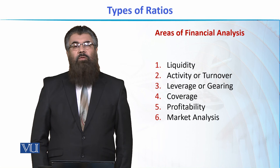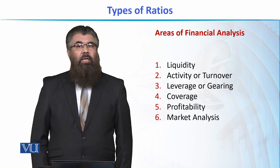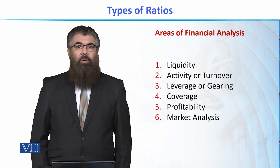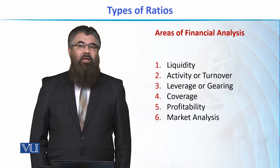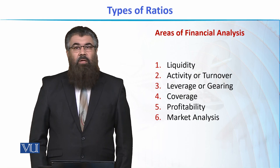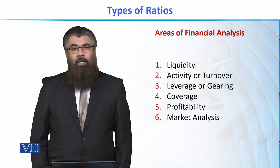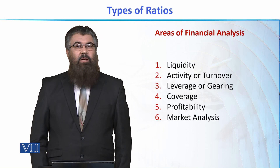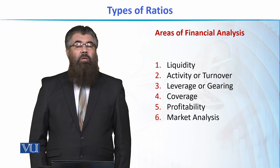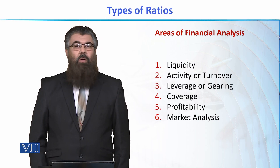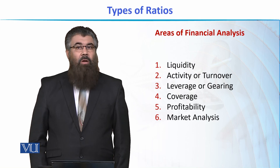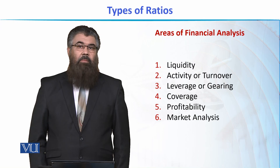For example, we talk about what is called the price-earnings ratio, where we compare the market price of a share to its earnings per share. We then try to use it in a meaningful manner so that shareholders and other stakeholders can benefit. So, across these six areas of analysis, we calculate, interpret, and examine different ratios from the perspectives of all groups of people related to the business — its stakeholders.